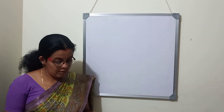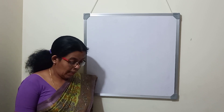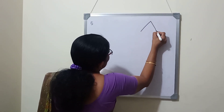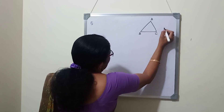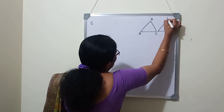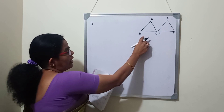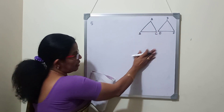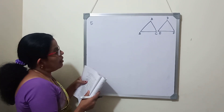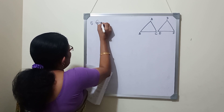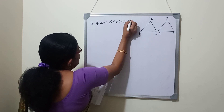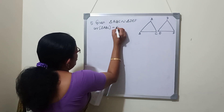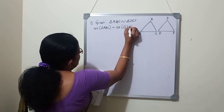Next question: If the areas of two similar triangles are equal, prove that they are congruent. For similar triangles, areas will generally never be equal because sides are proportional. Areas are equal only if the triangles are congruent - when AB equals DE, BC equals EF, and AC equals DF. Given: triangle ABC is similar to triangle DEF and area of triangle ABC equals area of triangle DEF. We need to prove triangle ABC is congruent to triangle DEF.